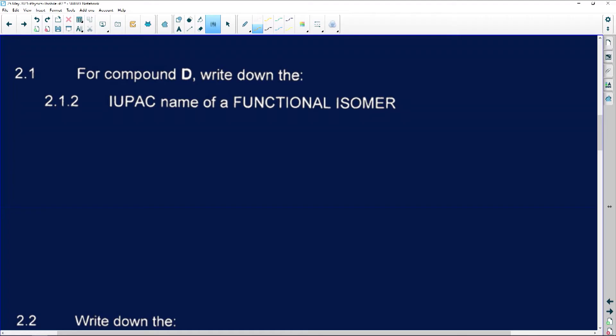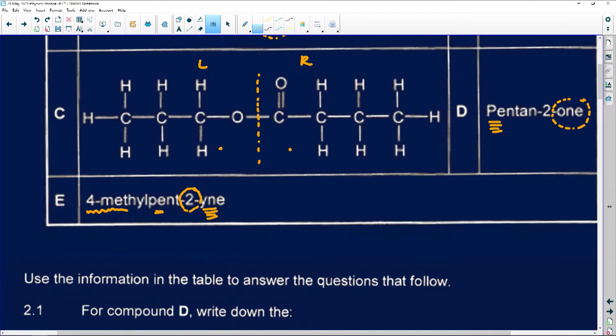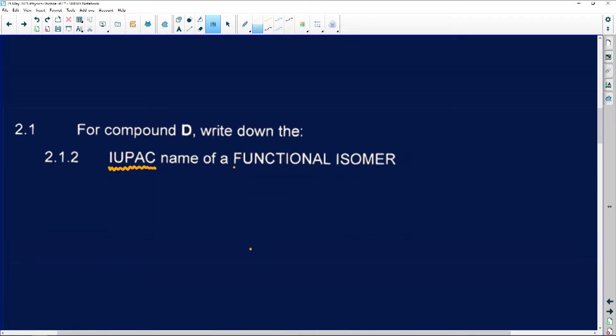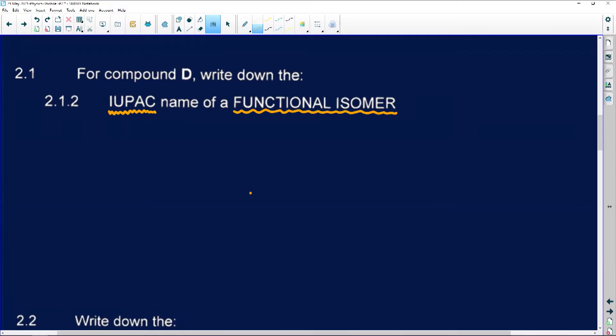Number 2.2.1 says write down the IUPAC name. So remember, the IUPAC is the way in which we name the functional isomer. They're not looking for number D. The name was already given, but the functional isomer. Remember, isomers means it's got the same number of carbons and hydrogens, however, the structure differs a little bit. When they talk about functional isomers, it means the functional group is different, however, the structure differs. Most of the time, there's various ways in which you can have the name for the functional isomer. The examiner's memo will have every option. But please don't recreate something out of your mind. We know that the properties of ketones means that an aldehyde must then be its isomer.